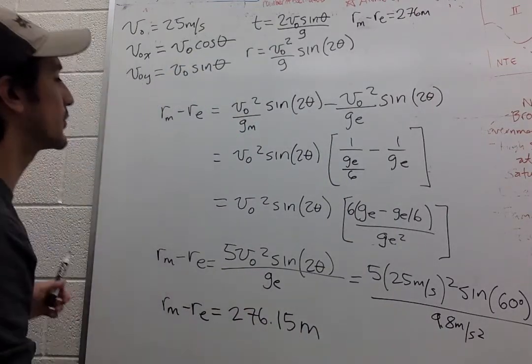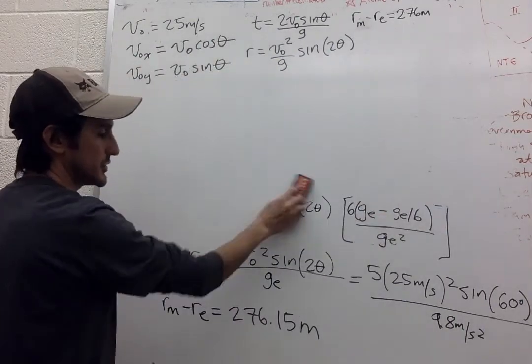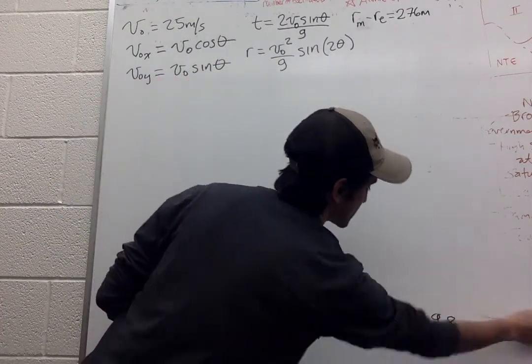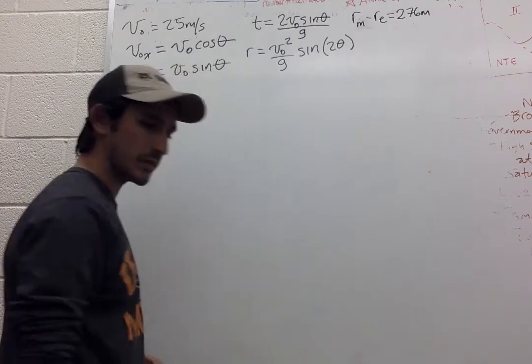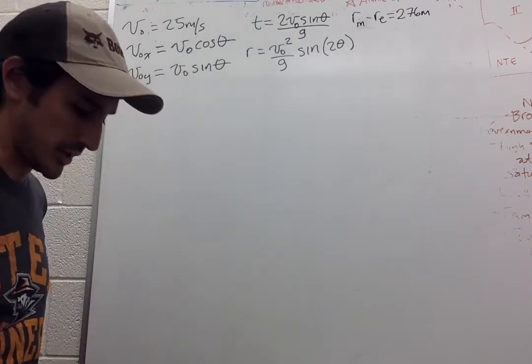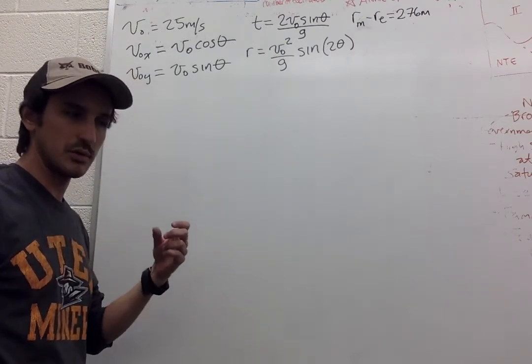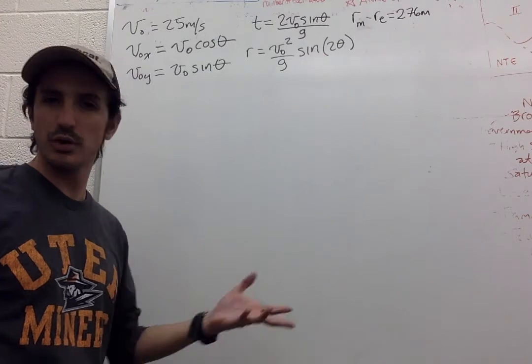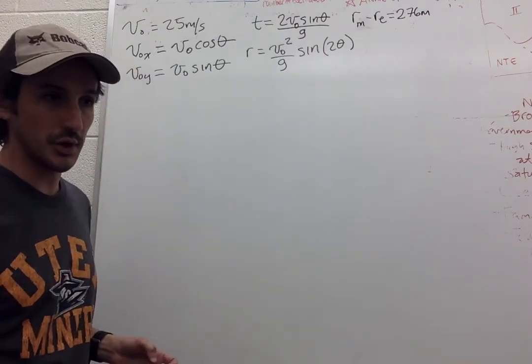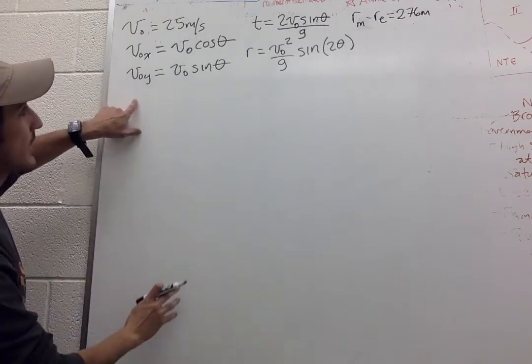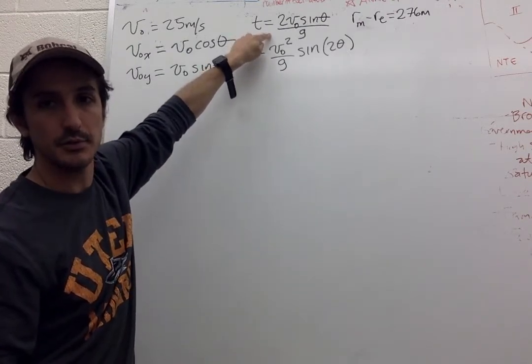So the last part of the problem asks for the difference in time. So for how much longer is the ball airborne on the moon? I guess there's no air on the moon. Well, whatever. Compared to the earth. And we already have the answer. It's over here.